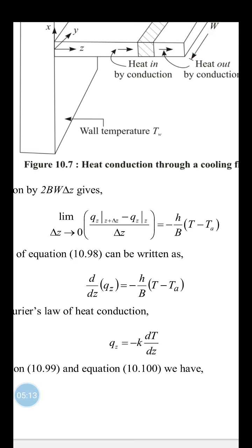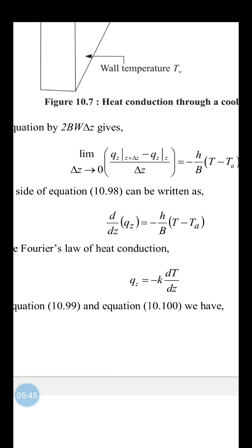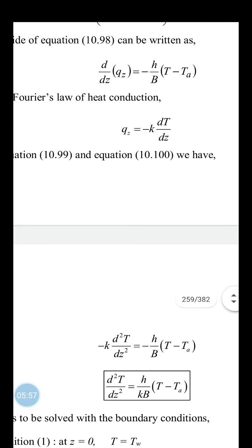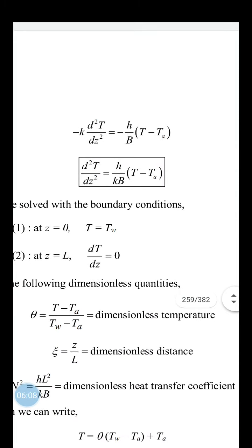Applying Fourier's law of heat conduction, q_z = −k·dT/dz, and substituting into the energy equation gives: −k·d²T/dz² = −(h/b)(T − T_a), which rearranges to: d²T/dz² = (h/kb)(T − T_a). This is the governing second-order ODE for temperature distribution in the fin.